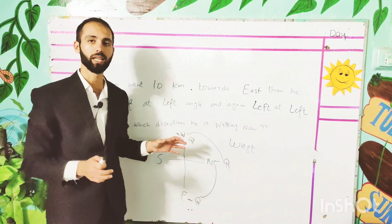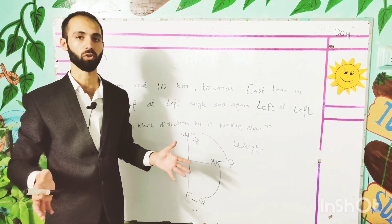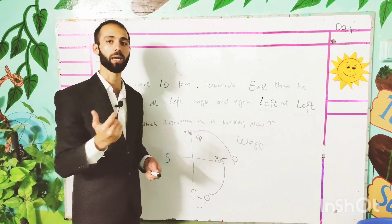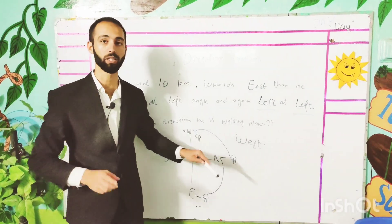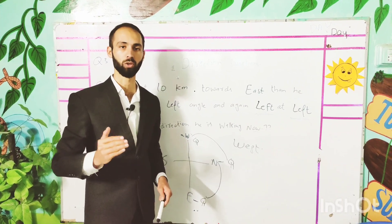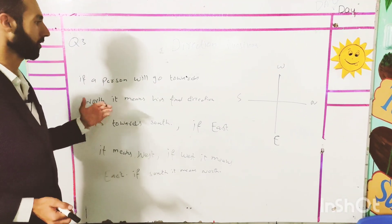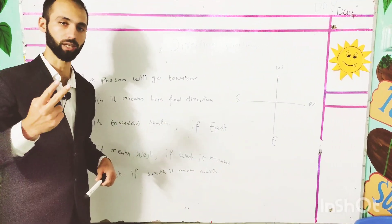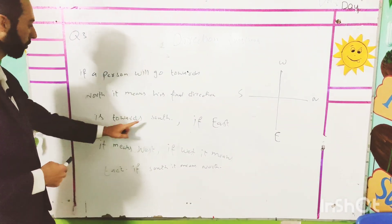This was a lengthy process for understanding. Now I'm going to explain it in short form — a shortcut for a direct answer. Because there is no time; there are 84 questions in 30 minutes. So, the short trick: if a person goes towards north and takes 2 times right at right angle, remember that the final direction is south — the opposite direction.